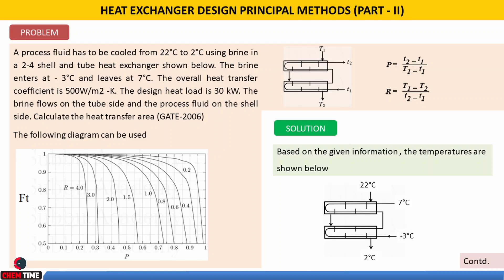As we have highlighted in previous presentations, the process fluid will be on the shell side and the utility fluid on the tube side. In this particular problem, the utility fluid is brine. The gate question paper provides this graph and configuration for solving this problem. This graph is available in the textbook 'Heat and Mass Transfer Data Book' by C.P. Kothandaraman. If the same problem is asked in a JNTUK question paper, we use that data book.